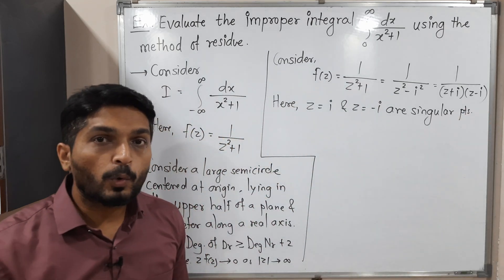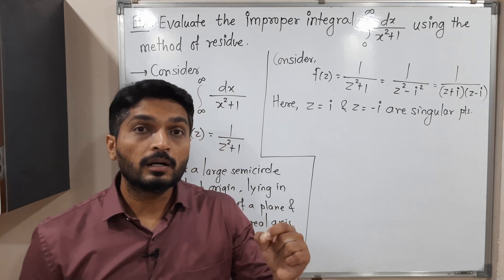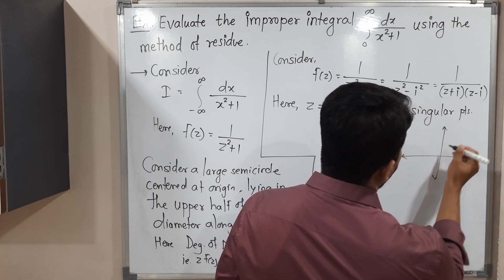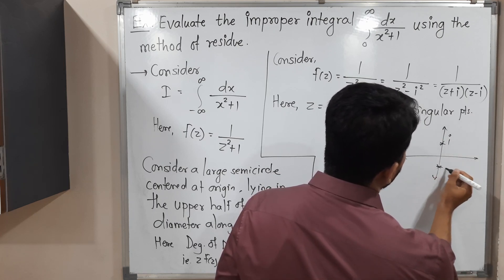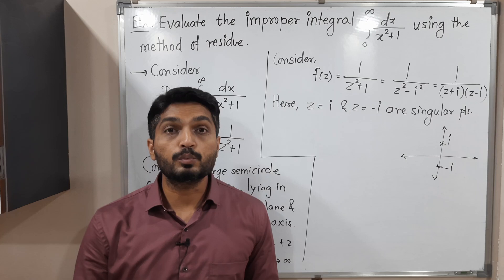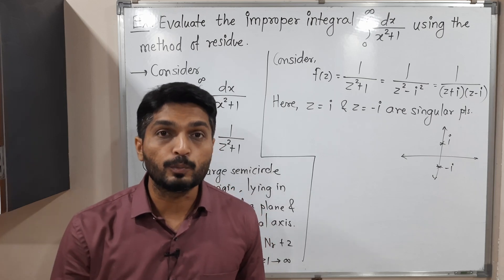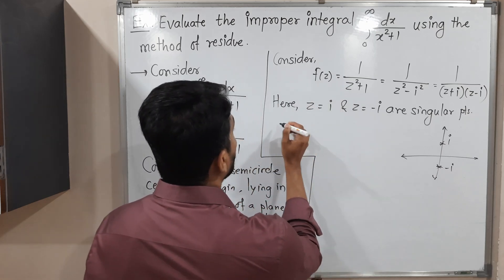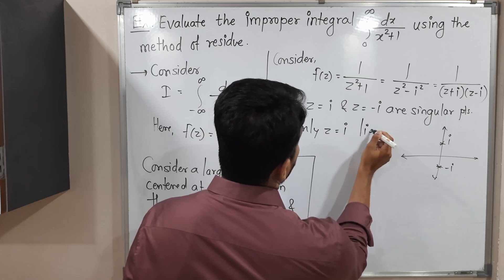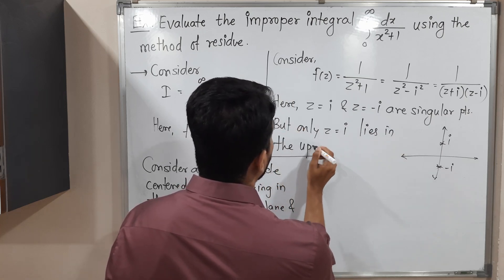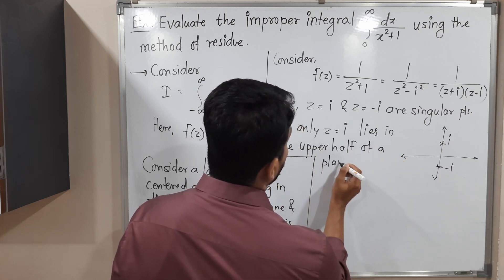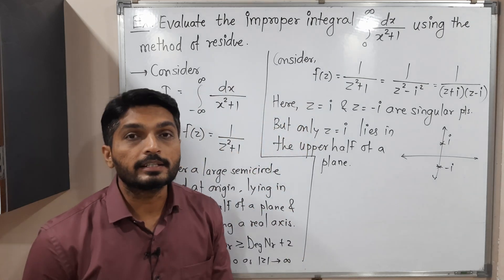We give importance to singular points lying in the upper half of the plane. On the imaginary axis, i lies in the upper half of the plane and −i lies in the lower half of the plane. So only z = i lies in the upper half of the plane, meaning we have to find the residue at z = i.